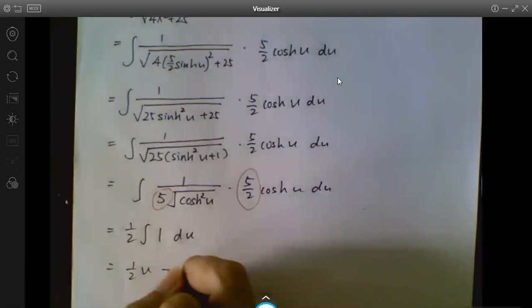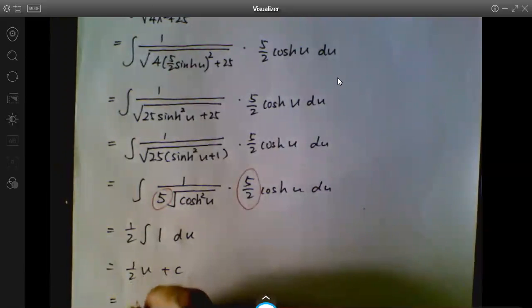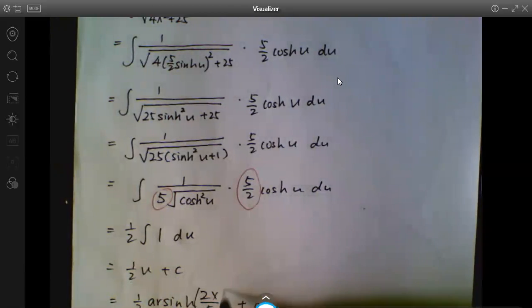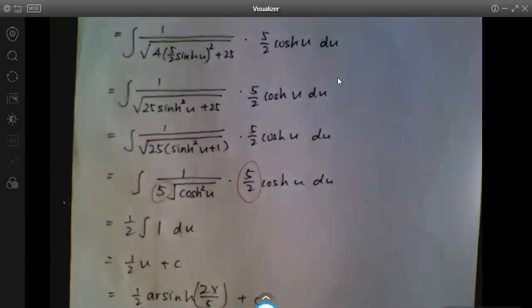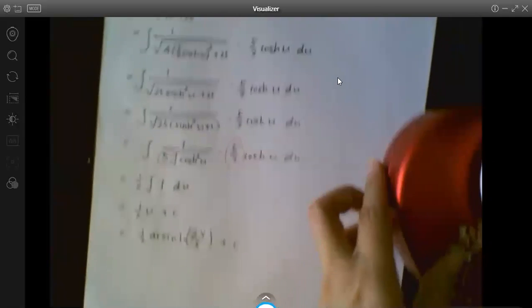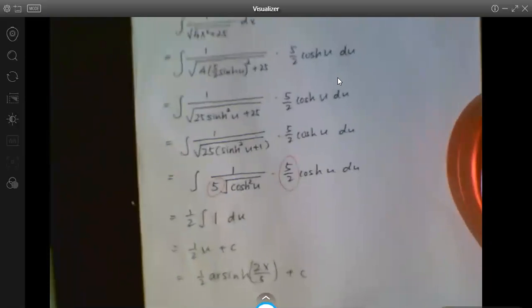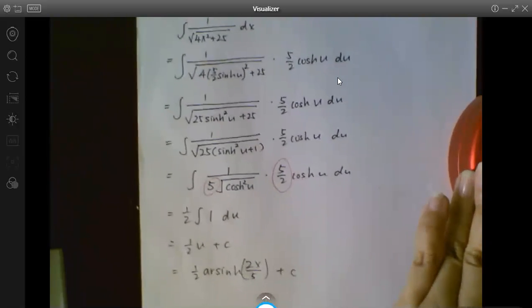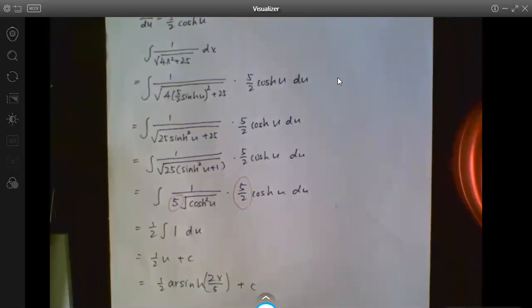So we have 1/2 integrate 1 du, which is 1/2 u plus c. And u is arcsinh(2x/5), so that's it. Take some time to look at it. In the intermediate steps, if you need more explanation, please feel free to let me know. Take some time. Thank you.